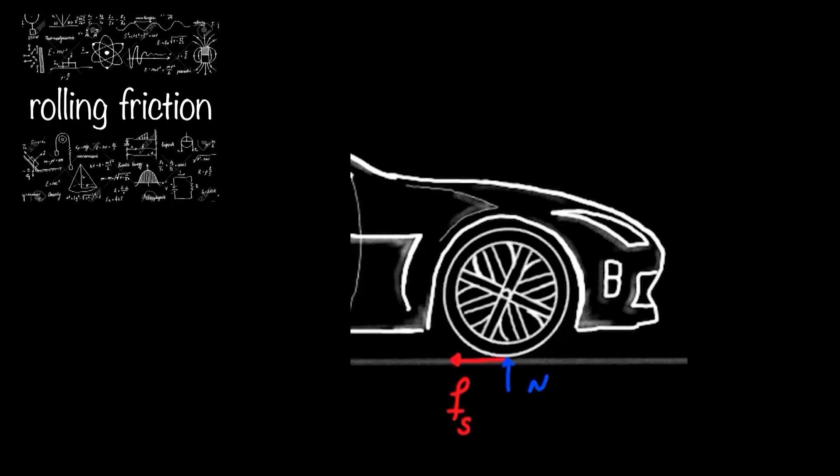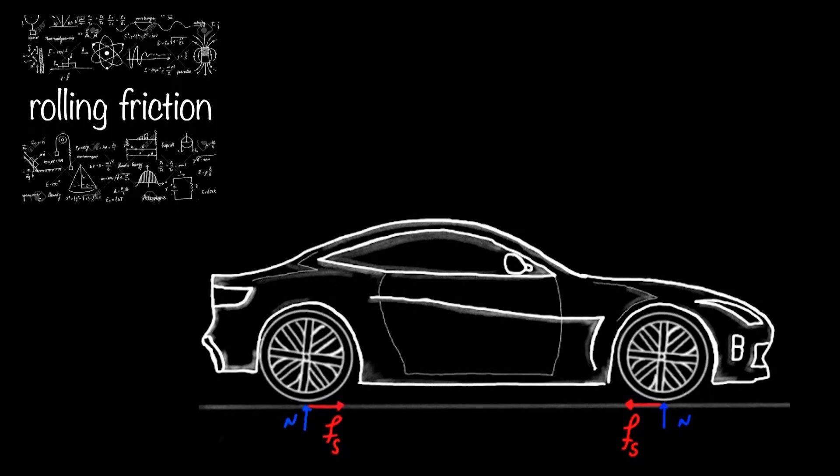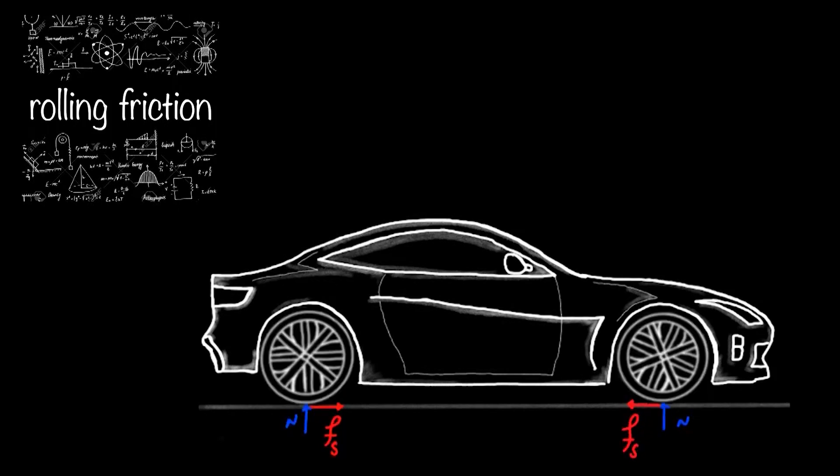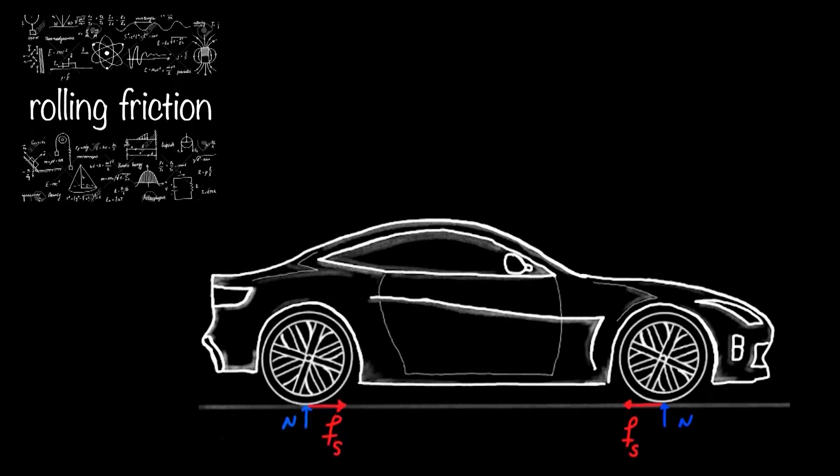Meanwhile, in rear wheels, the applied torque by the motor is responsible for producing the acceleration. For a moment, let's assume that the exerted friction is directed to the left. Considering that, this force would no longer resist the motion. As a matter of fact, it is helping the car move forward and provides extra energy.